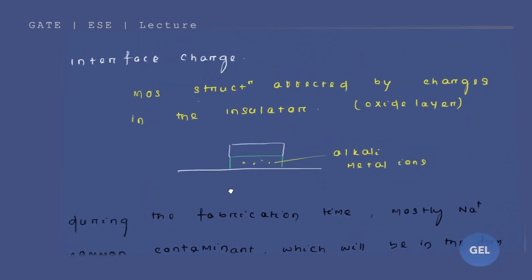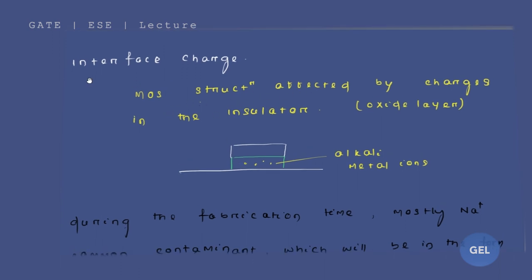Now we are going to add another term. Look here carefully. So MOSFET structure, that is called as interface charge. This is the fourth term that we are going to add. Here is your n plus region, source and drain. Now this is your oxide layer, this is your gate layer. Look here carefully, MOSFET structure affected by charges in the insulator.